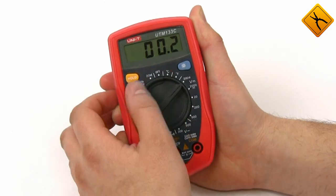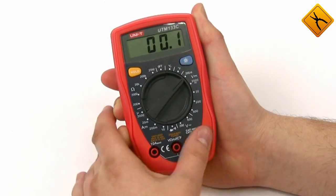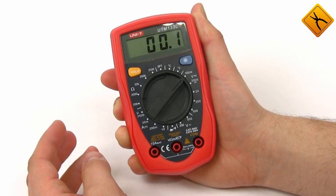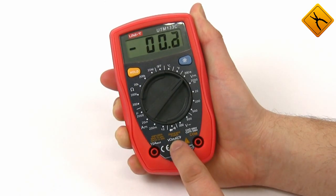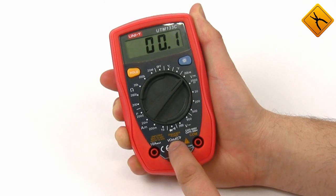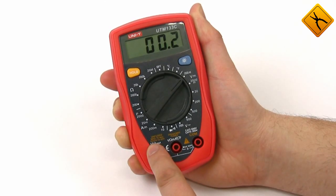The measurement ranges are switched manually. The outputs for test leads are located in the lower part of the device. COM input terminal. Input terminal for measuring resistance and current up to 200 milliampere and terminal for measuring direct current up to 10 ampere.